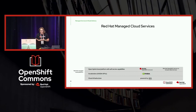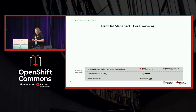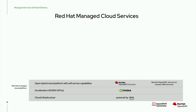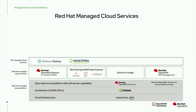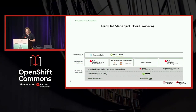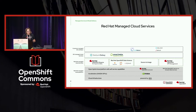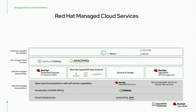We start with the Red Hat managed cloud platform — a very stable platform that allows us to work not only from a hybrid cloud but on-prem, public cloud, and even to various edge devices. On top of that we have Red Hat managed cloud services, including the Red Hat OpenShift data science platform at the center. Above that we have ISV managed cloud services — vendors such as Starburst Galaxy or Anaconda integrated into the platform — and then customer-managed ISV software, such as Intel OpenVINO or Seldon Deploy for things like quantization and inferencing.